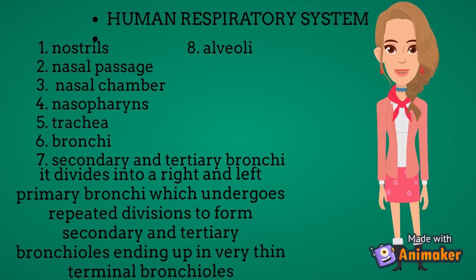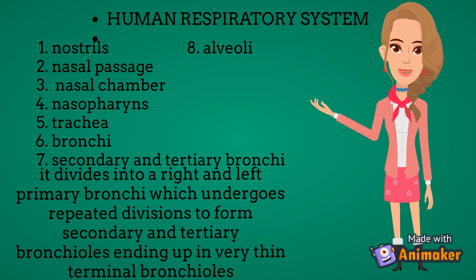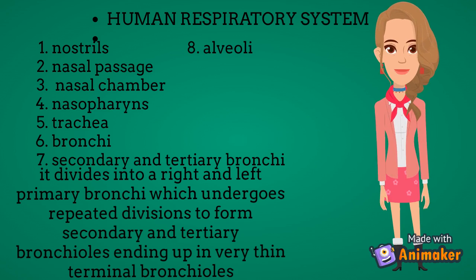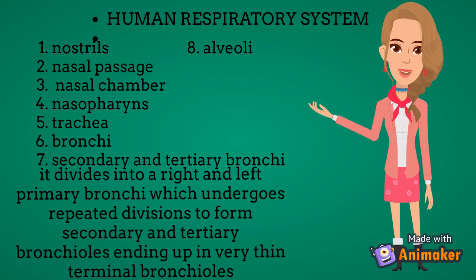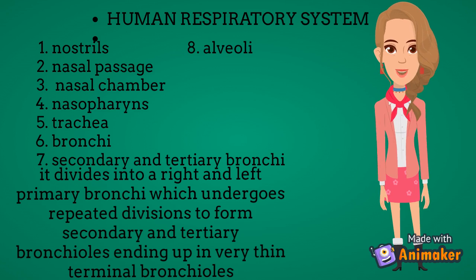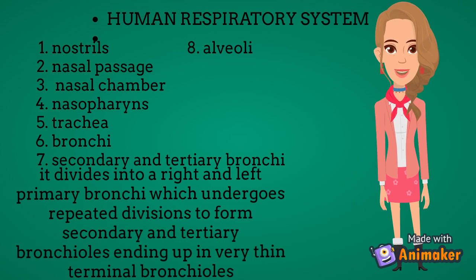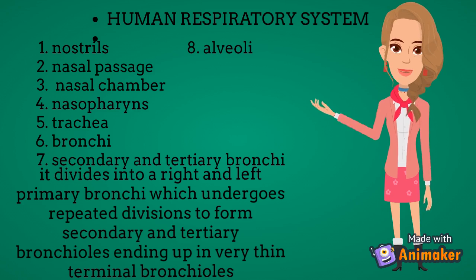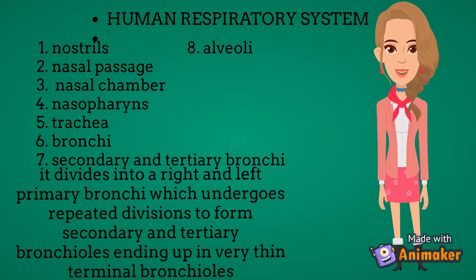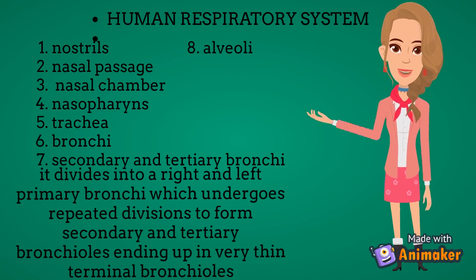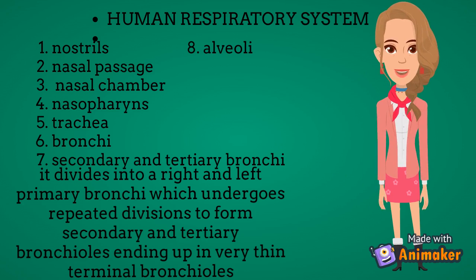The trachea divides at the level of the 5th thoracic vertebra into a left and right primary bronchi. Each bronchus undergoes repeated division to form secondary, tertiary bronchi, and bronchioles, ending up in very thin terminal bronchioles. The trachea, primary, secondary, and tertiary bronchi, and the initial bronchioles are supported by incomplete cartilaginous rings.